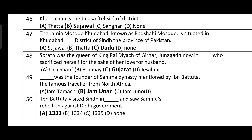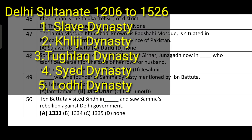Delhi Sultanate jo 1206 se 1526 tak rahi, usme paanch major dynasties thin: pehli Slave dynasty, phir Khilji dynasty, phir Tughlaq dynasty, phir Sayyid dynasty, aur phir Lodhi dynasty — ye paanch dynasties hain.